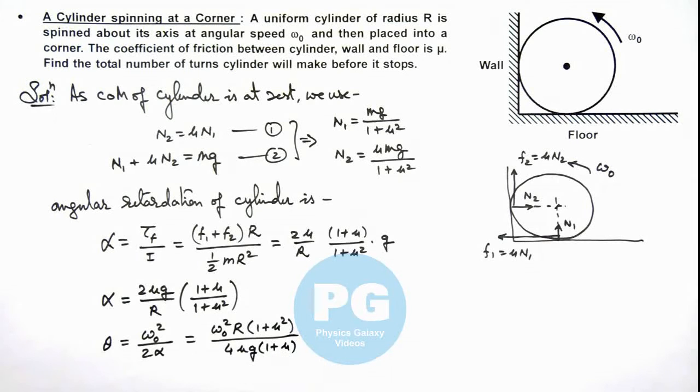Now in this situation as we have got the value of theta here, we can calculate the number of turns. The number of turns rotated by cylinder will be n, and that is equal to theta upon 2 pi.